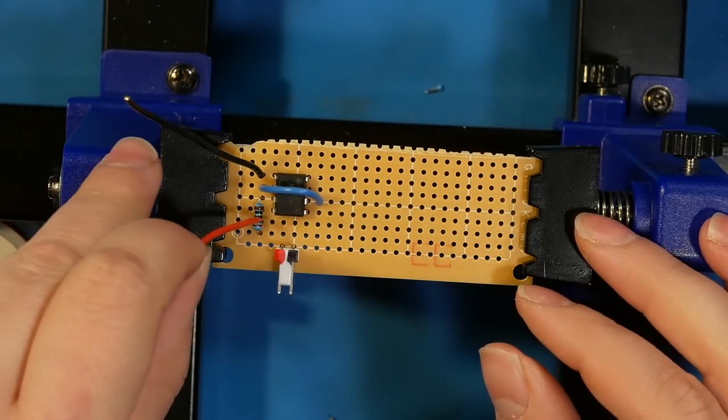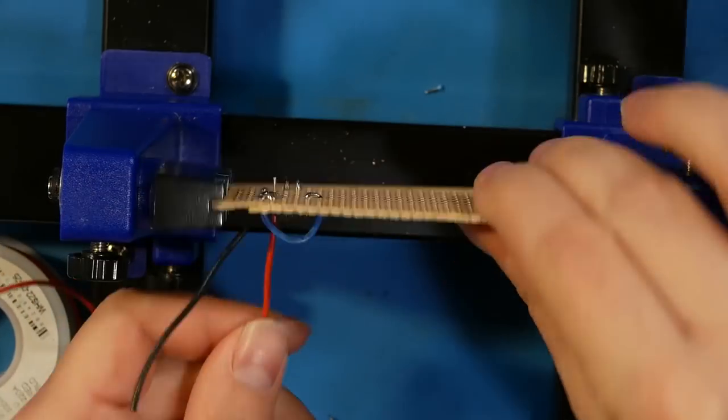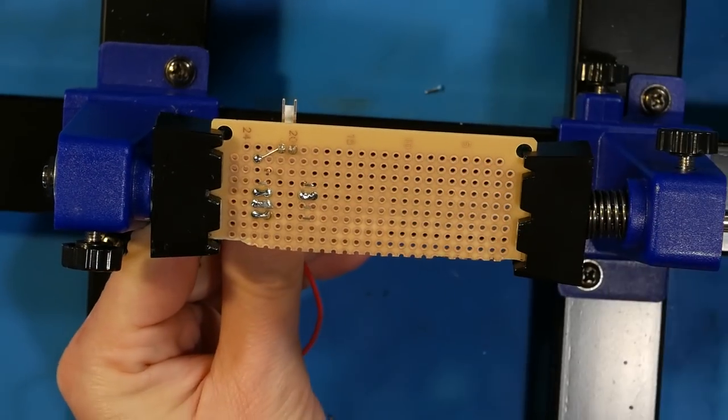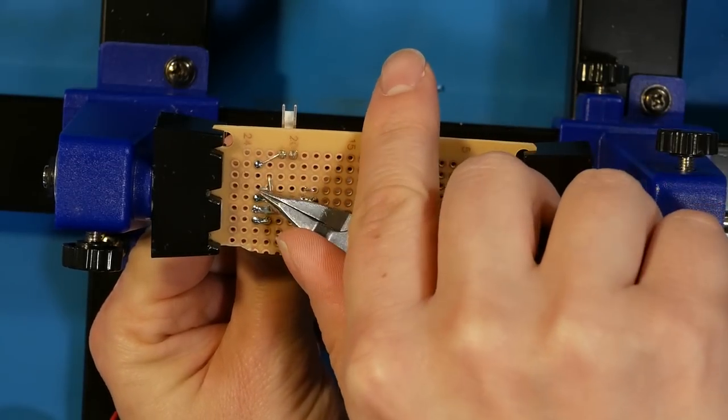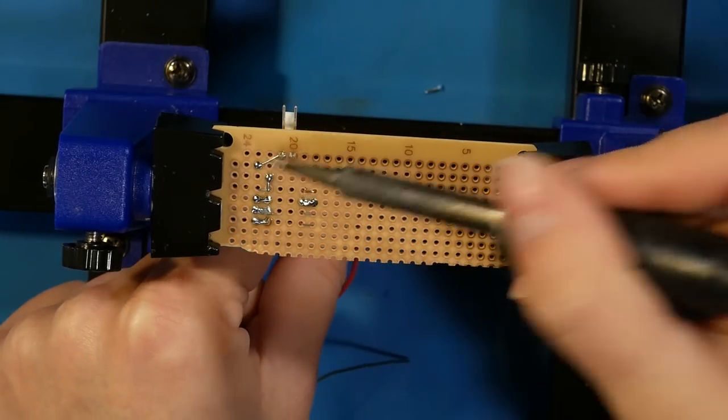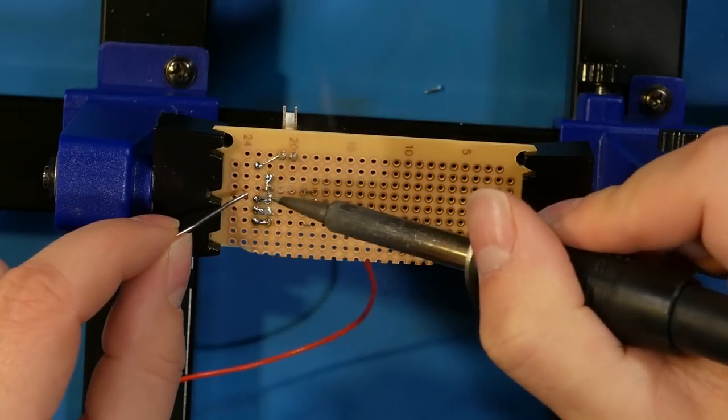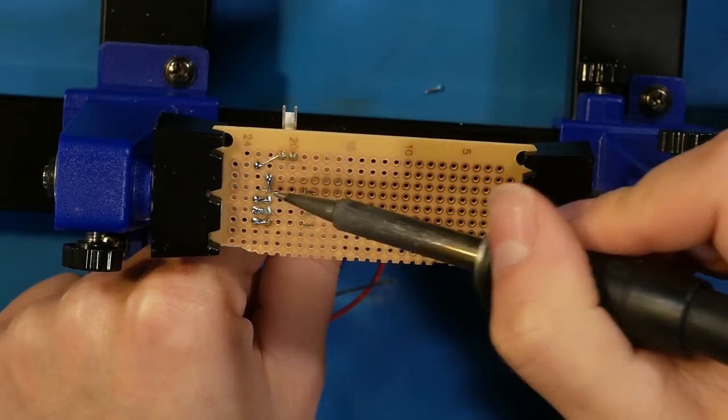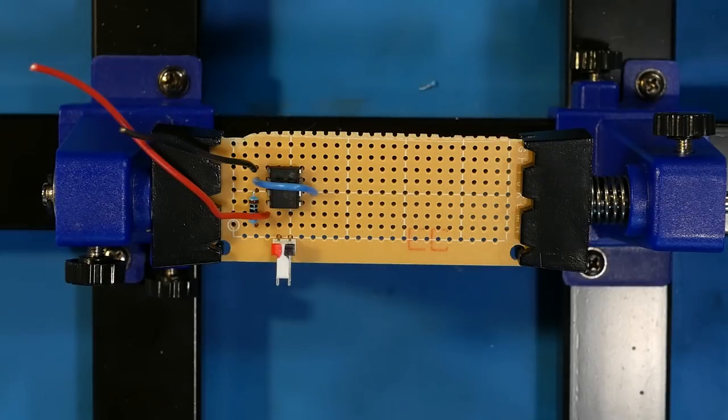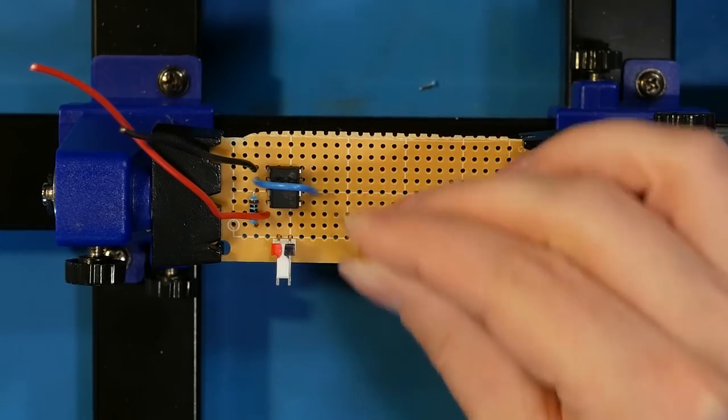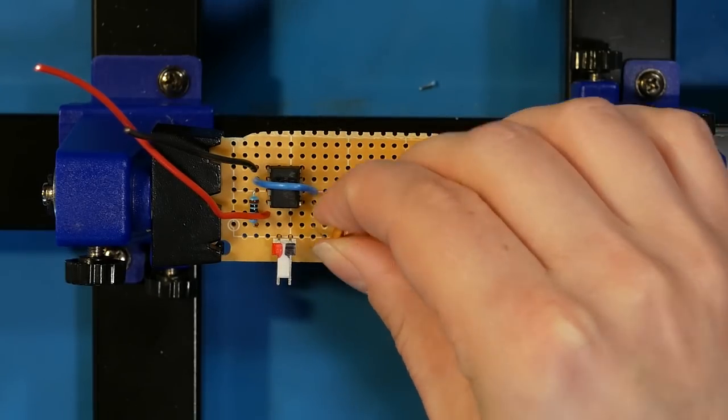Next, add a red wire at pin four that will later get connected to VCC. Pin four is reset and active low, so connecting it to VCC keeps the pin inactive. Pin five needs a 0.01 microfarad capacitor that connects to ground. Solder one lead to pin five and leave the other unsoldered for now.